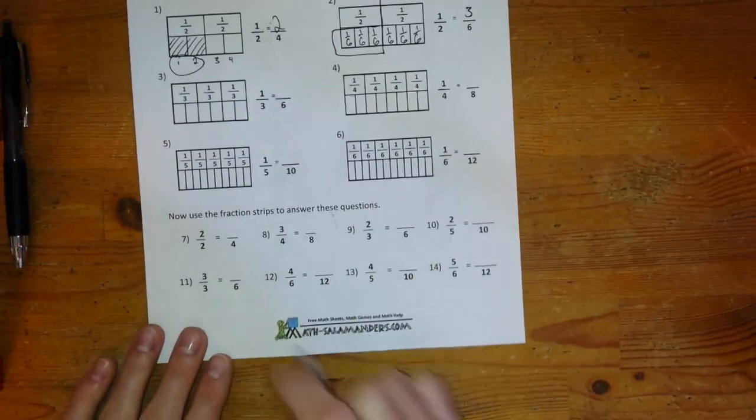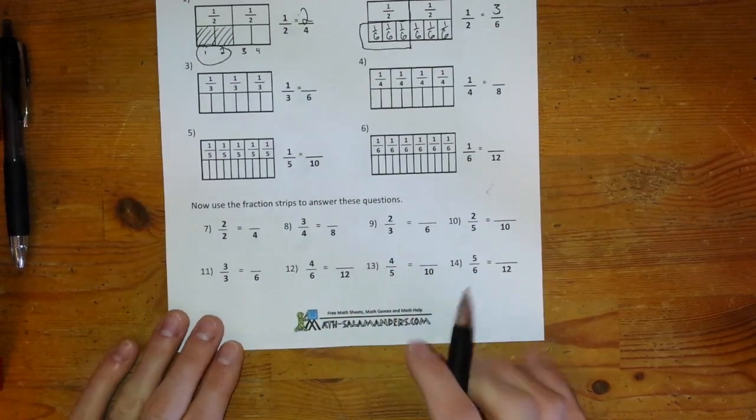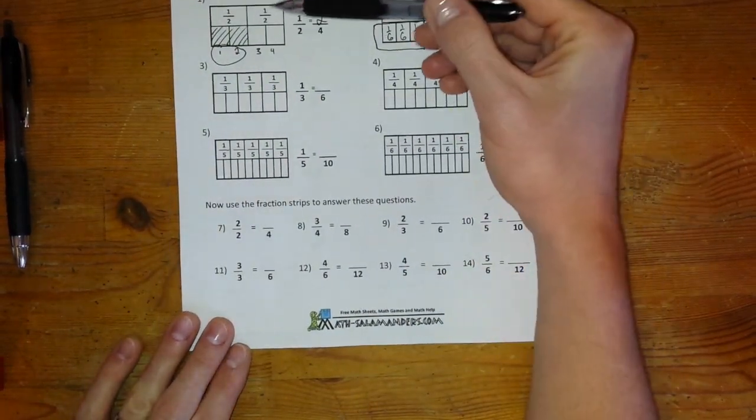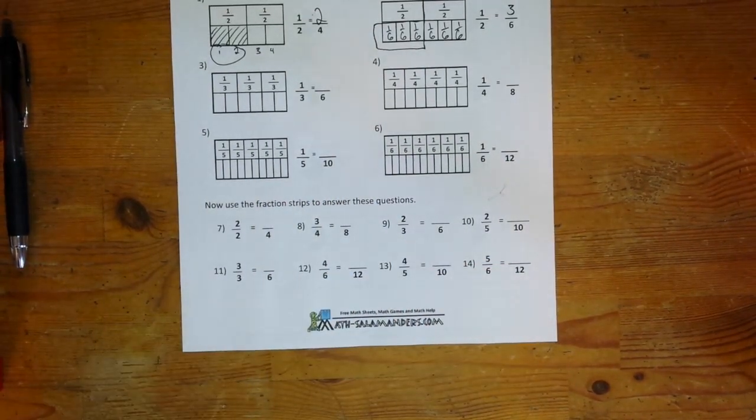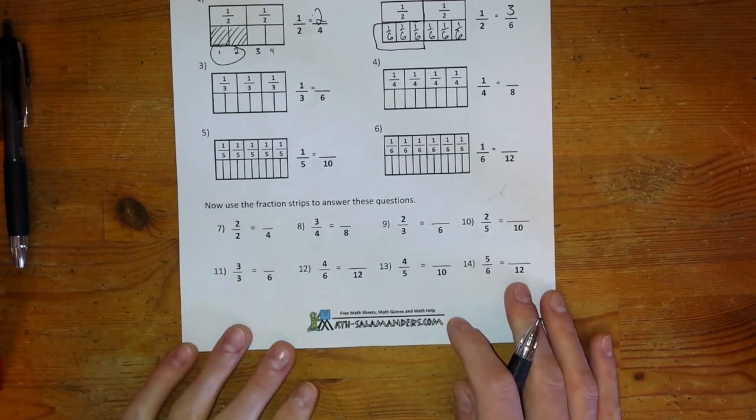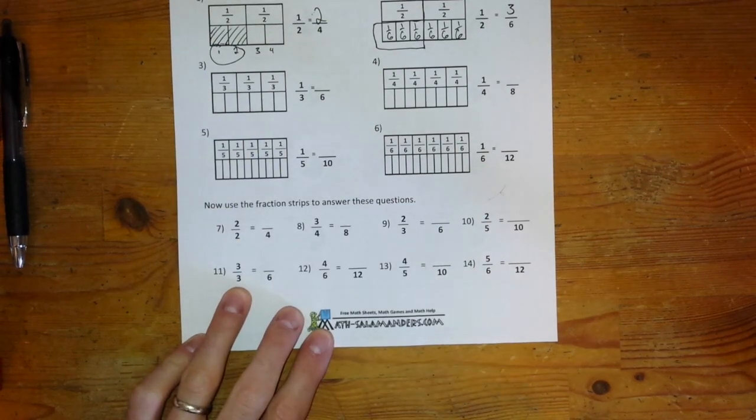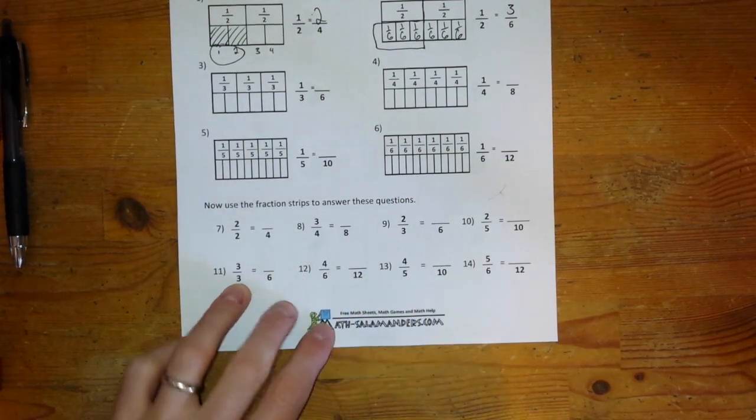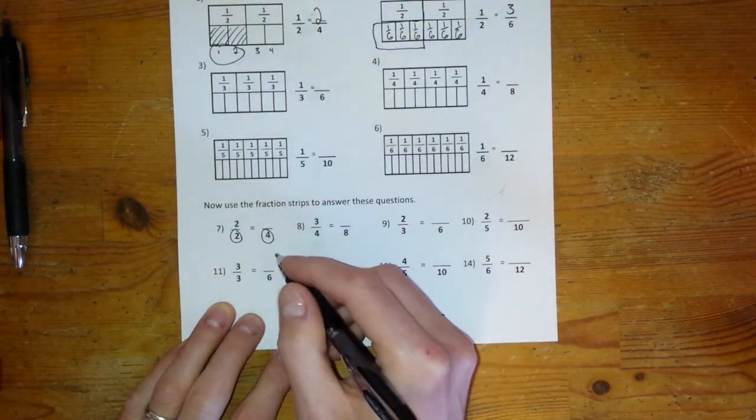Now at the bottom, it says use the fraction strips to answer these questions. So you'll need to figure out which one of these to look at in order to solve the question. Now you might be able to solve these in your head and some of them are maybe more obvious than others, but let's look to the sheet to solve them. So two halves now equals how many fourths? So I need to find the question that has halves and fourths, and that's this first one here.